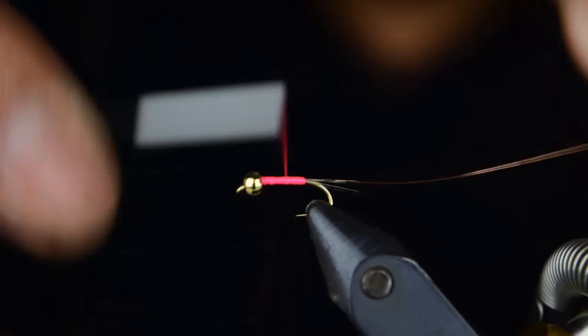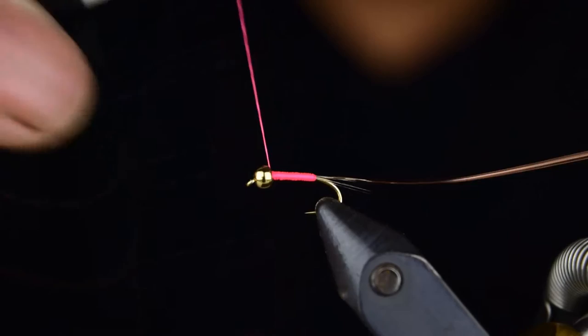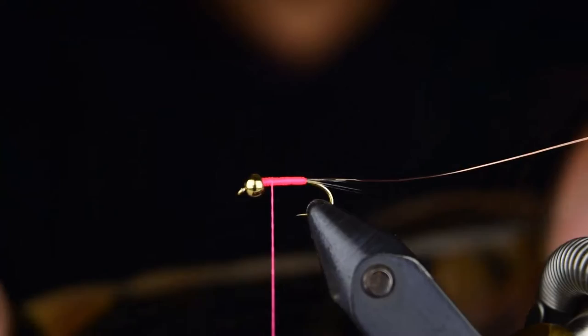About there we'll wrap forward, and by doing this we're also adding some bulk to our fly. We do want to make a nice taper on here, so you want to go up to the bead and then wrap back for the next step to right about there.